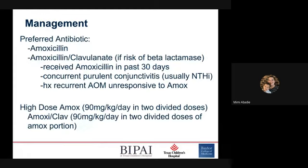For antibiotic management, first line is amoxicillin. Importantly, per IMCI/S15 and South African guidelines, first line for acute otitis media is high-dose amoxicillin — that is 90 milligrams per kilogram per day in two divided doses. We use high-dose amoxicillin because of the prevalence of penicillin resistance we see in some ear infections. Using high-dose amoxicillin increases the concentration of the antibiotic that makes it into the middle ear, providing activity against most strains of strep pneumo.